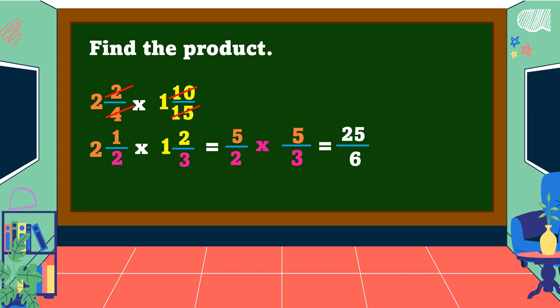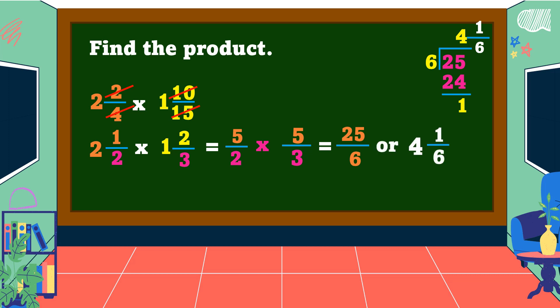Next, multiply both numerators and both denominators: 5 times 5 is 25, and 2 times 3 is 6. The result 25/6 is an improper fraction. To reduce it: 25 divided by 6 is 4, and 4 times 6 is 24; 25 minus 24 is 1. We take 1 as our numerator and 6 as our denominator. Therefore, 25/6 equals 4 and 1/6, and this is our final answer.